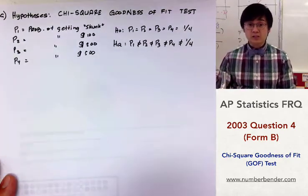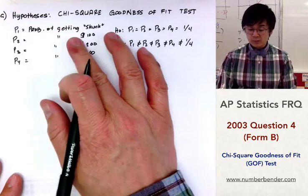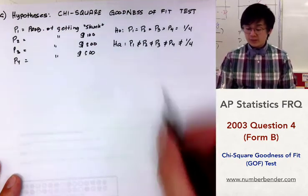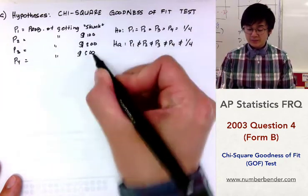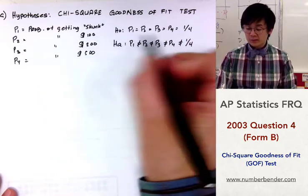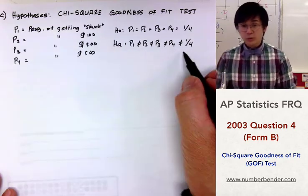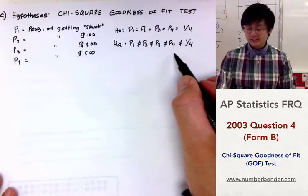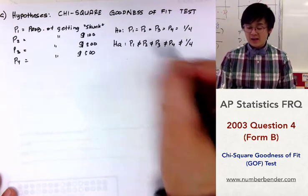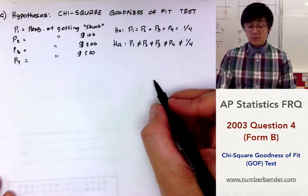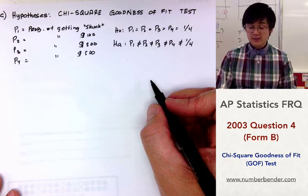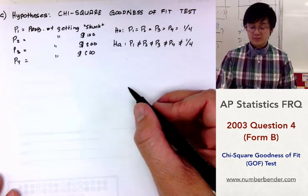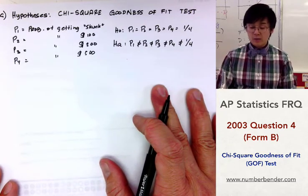Our hypotheses for the chi-square goodness of fit test: H₀ states that the probability of getting each outcome (skunk, $100, $200, $500) is consistent — each equal to one-fourth. The alternative hypothesis states that it is not consistent, meaning at least one proportion differs from what is stated in the null hypothesis. We also need to satisfy the conditions of normality, independence, and randomness.